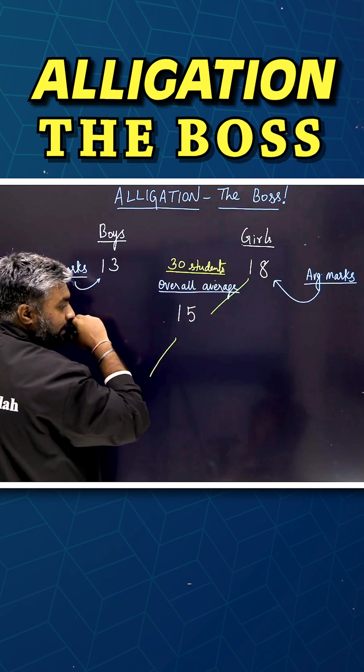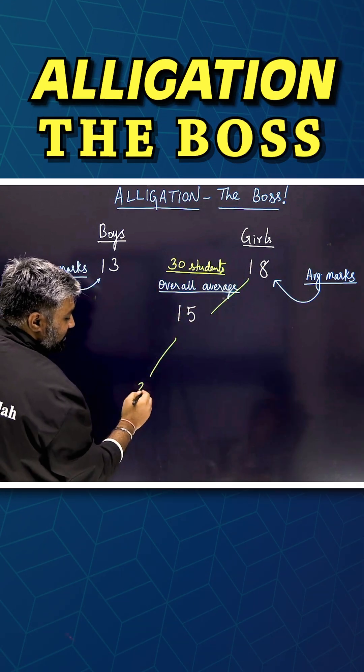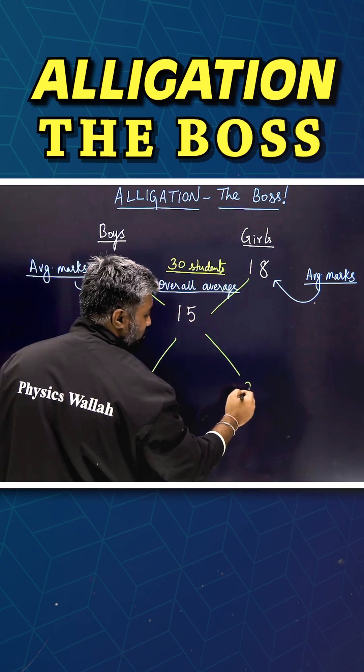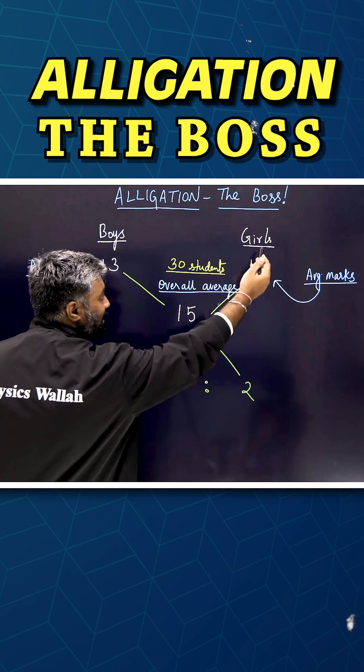Find out the difference between, it's always larger number minus the smaller number. So 18 minus 15 is 3, 15 minus 13 is 2. This is going to be the ratio in which the boys and the girls are split.